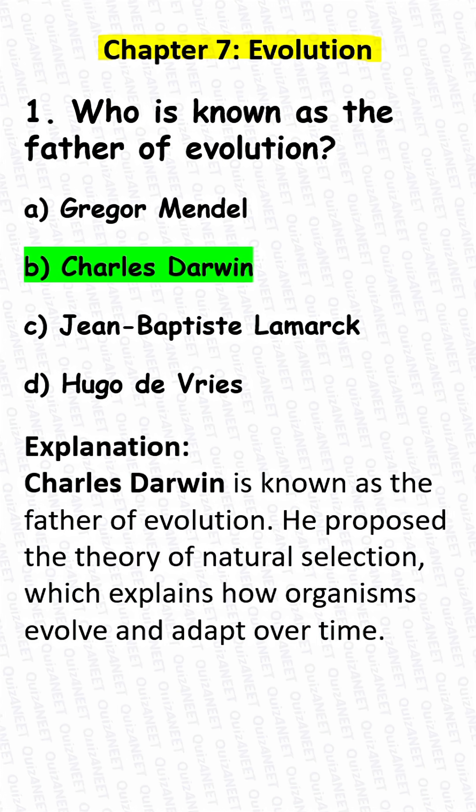Correct answer: B. Charles Darwin. Explanation: Charles Darwin is known as the father of evolution. He proposed the theory of natural selection, which explains how organisms evolve and adapt over time.